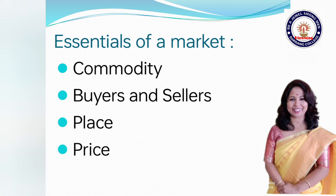There are some essentials of a market. Number 1: commodity which is dealt with buyers and sellers. Number 2: the existence of buyers and sellers in the market. Number 3: a place whether it is a certain region, a country, or the entire world. Number 4: one price should prevail for the same commodity at the same time.